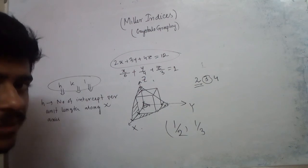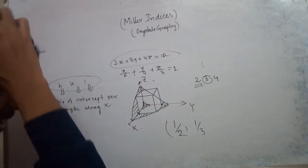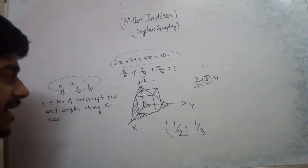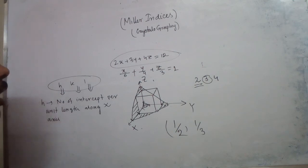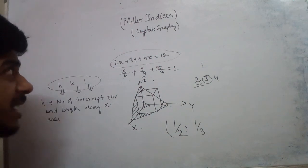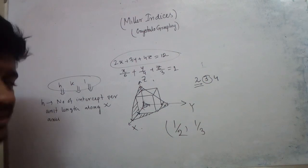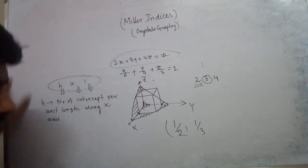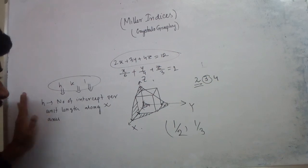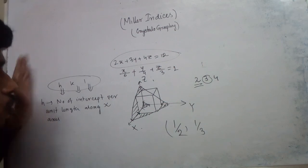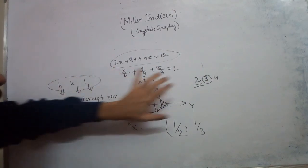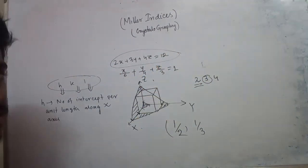So that is why we follow this procedure: take the reciprocal and multiply by the least common denominator. In our next video, we shall apply the process of Miller indices, construct planes in the unit cube cell, and also learn about Miller indices of directions. This is only an introduction class covering the importance of Miller indices. Thank you.